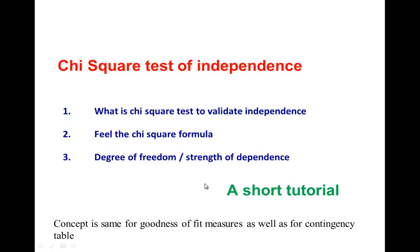In this video we are going to learn what the chi-square test of independence is. We are going to cover essentially four things: what is the chi-square test to validate that a particular factor or variable has an impact on another variable, or in other words, whether two variables are associated or dependent.